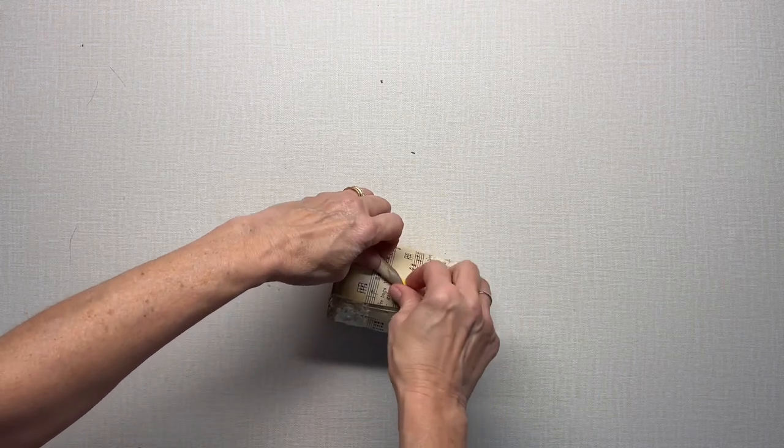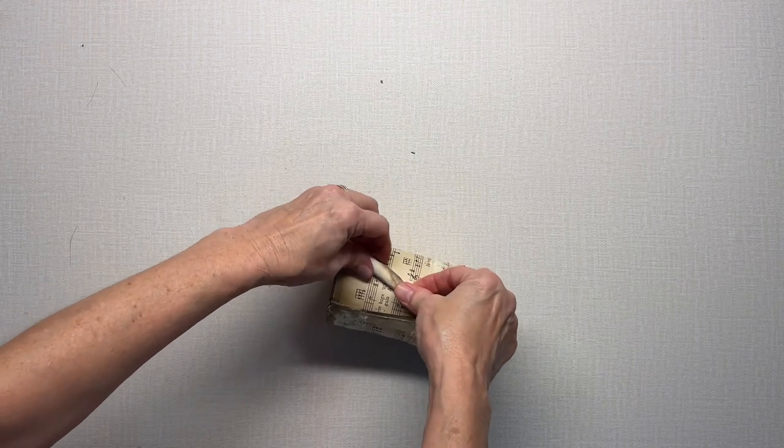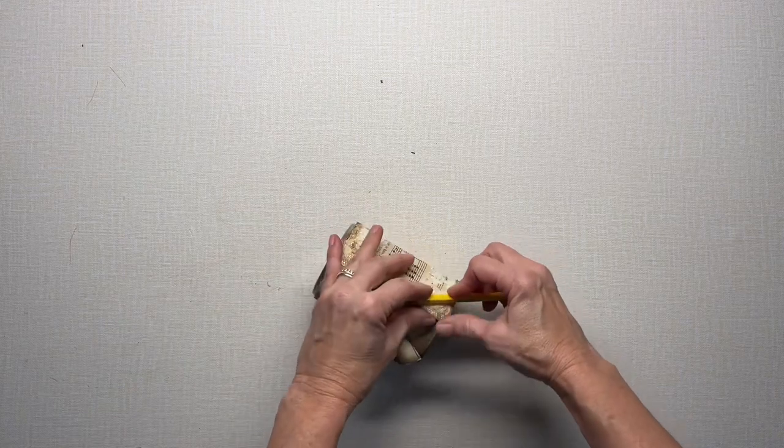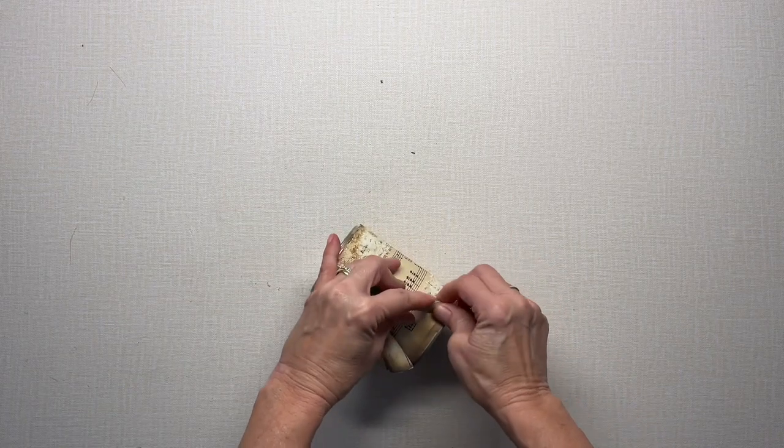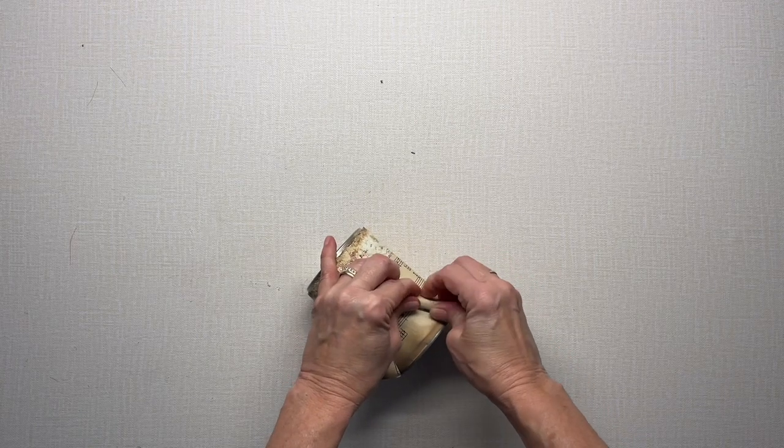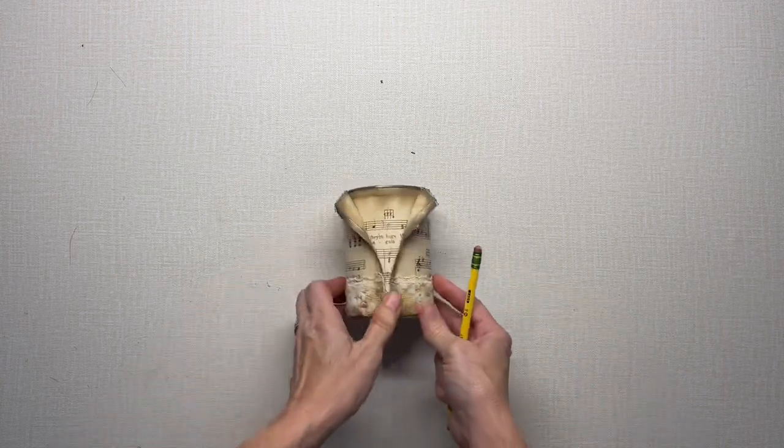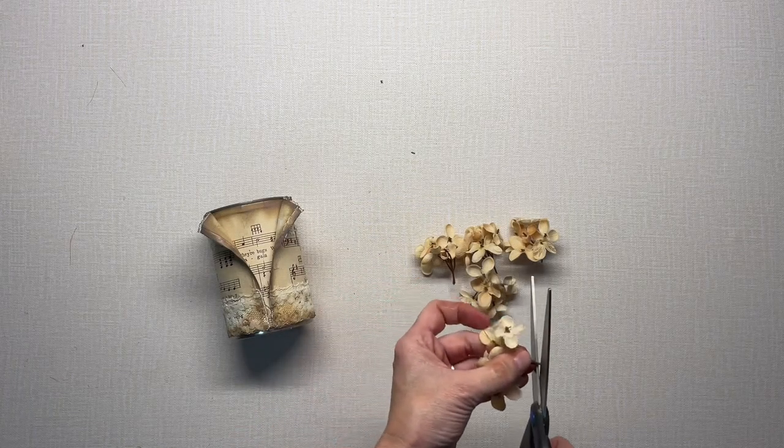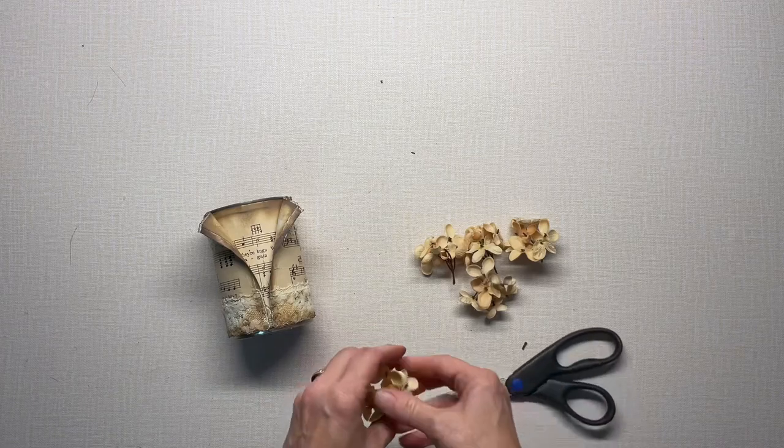Because that glue has not set yet, it's really easy to form it. But even if you used hot glue, which dries immediately, that paper will still form the way you want it to.